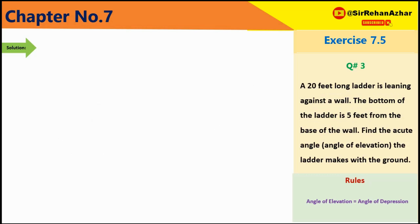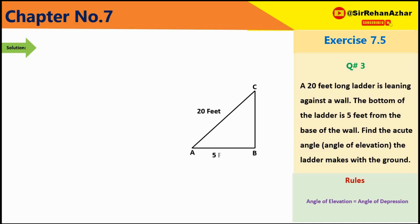Question number 3: A 20 feet long ladder is leaning against a wall. The bottom of the ladder is 5 feet from the base of the wall. Find the acute angle the ladder makes with the ground. Figure draw करते हैं: ladder AC, ground AB, wall BC। AC = 20 feet, AB = 5 feet, theta unknown।